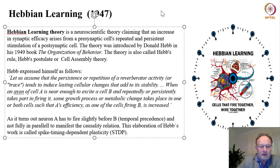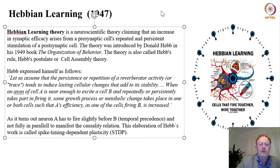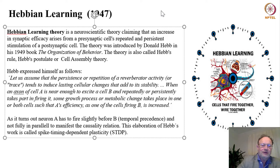Hebb expressed himself as follows: 'Let us assume that the persistence or repetition of a reverberant activity tends to induce lasting cellular changes that add to its stability. When an axon of cell A is near enough to excite cell B and repeatedly or persistently takes part in firing it, some growth process or metabolic change takes place in one or both cells such that the efficiency of A as one of the cells firing B is increased.' As it turns out, neuron A has to fire slightly before B — not fully in parallel — to manifest the causality relation. This elaboration is called spike timing dependent plasticity.